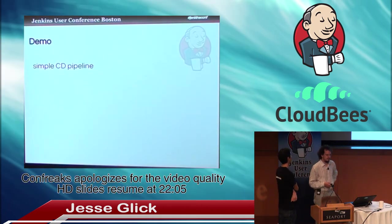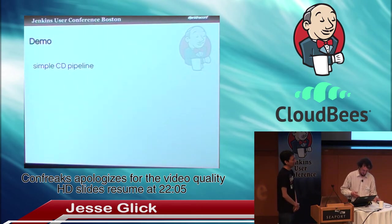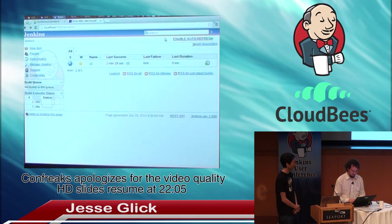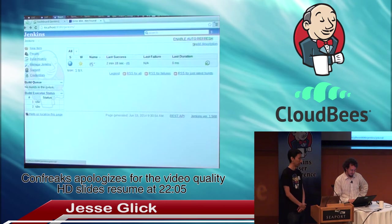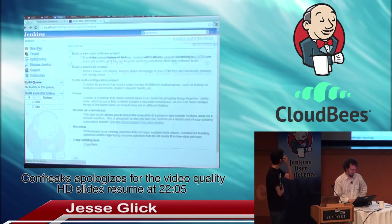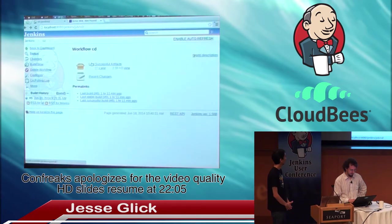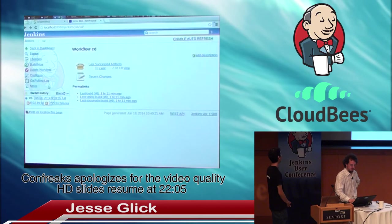Let's switch to a demo to see all of this together. Here I have Jenkins running with a workflow pre-built. If you want to make a new one, you just select workflow from the menu. This one looks like a project with builds, artifacts, changes, and all the usual stuff you'd see in a Jenkins job.